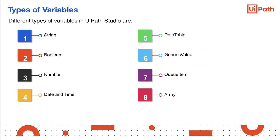The type of a variable defines the type of data that can be stored inside the variable. The different types of variables available in UiPath Studio are string, number, date and time, data table, boolean, generic value, queue item, and array. These are discussed in detail in the subsequent slides.